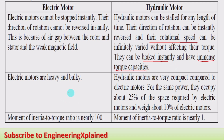The second point is that electric motors are heavy and bulky, whereas hydraulic motors are very compact — they are called power packs. For the same power output, hydraulic motors occupy about 25 percent of the space and weigh about 10 percent of the weight of equivalent electric motors.